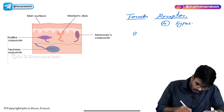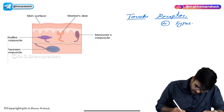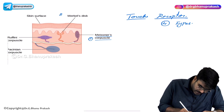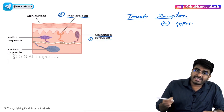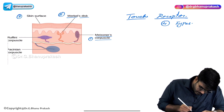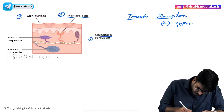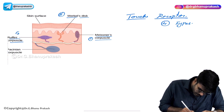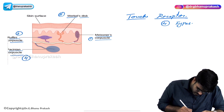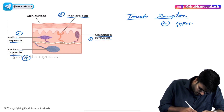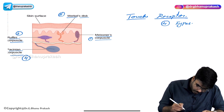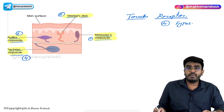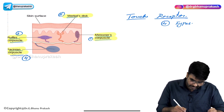The first type of touch receptors are called Meissner's corpuscles, second type are called Merkel discs, third type are called Ruffini's corpuscles, and fourth type are called Pacinian corpuscles. So there are four types: Meissner's corpuscles, Merkel's disc, Ruffini's endings or Ruffini's corpuscles, and Pacinian corpuscles.